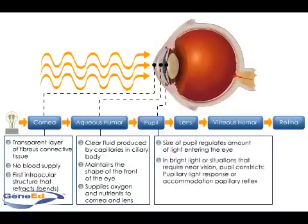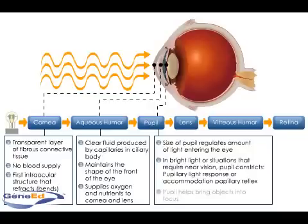In bright light, or situations that require near vision, the pupil constricts to reduce the amount of light passing through to the lens. This reaction is known as the pupillary light response, or accommodation pupillary reflex. The pupil also helps to bring objects into focus by adjusting the depth of focus.